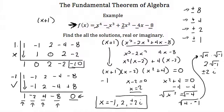Notice we have four solutions: 1, 2, 3, 4 — and we had a fourth degree polynomial, so we had to have exactly four solutions.